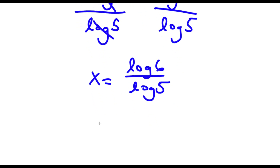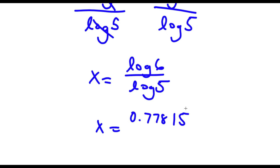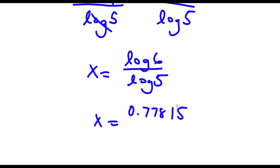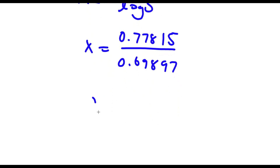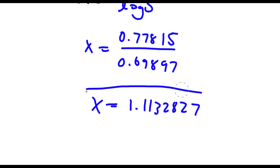Now log 6 is equal to 0.77815, and log 5 is equal to 0.69897. So now if I divide these two, I get 1.1132827. So this is my answer.